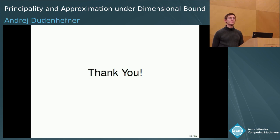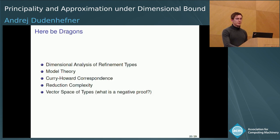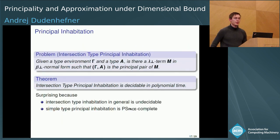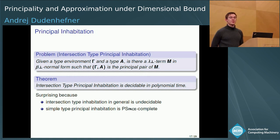Question: What is the intuition for why the principal inhabitation problem is in polynomial time? The intuition is that the types that are principally inhabited have a very restricted shape where each type variable occurs at most twice — once positive, once negative. So you can link them together, and you always know which component you are allowed and required to use. Therefore it just becomes a straightforward algorithm.